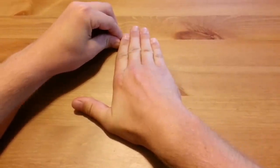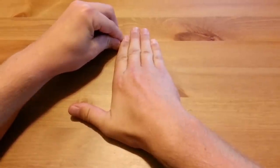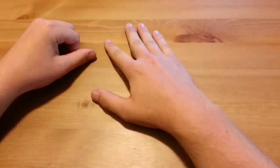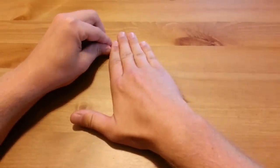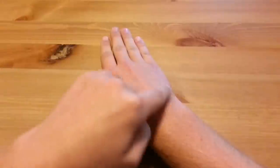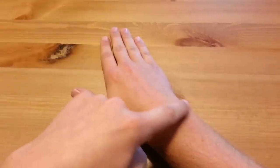This is what causes the characteristic ulnar deviation or ulnar drift seen in the hands of many rheumatoid arthritic patients, where the fingers bend towards the ulnar side of the arm, meaning the side of the arm where the ulna is located, the pinky finger side.